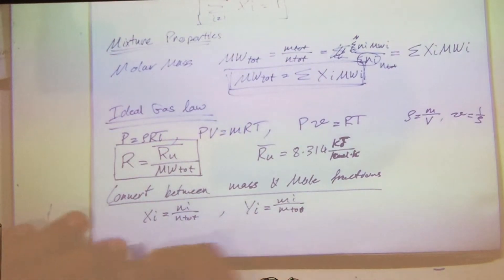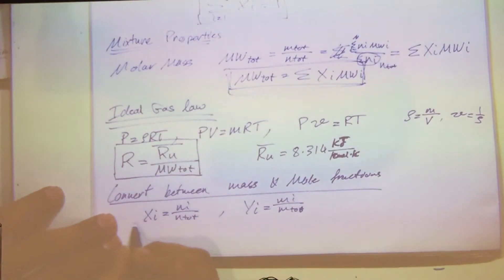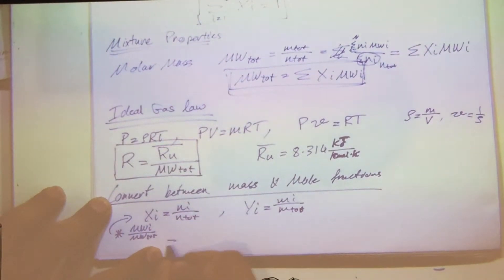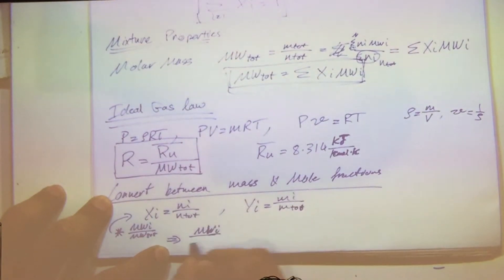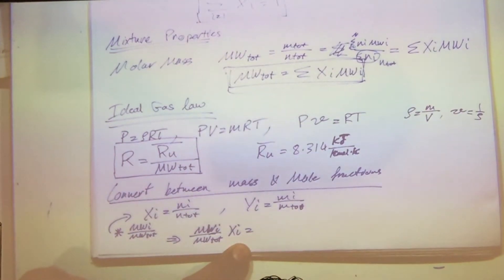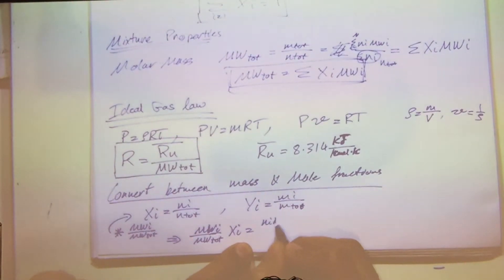So if I go and say, let's multiply the mass fraction by the molecular weight of each individual species divided by the molecular weight of the total. So what am I going to get? I'm going to get the molecular weight of each individual species over total multiplied by Xi. Now, you don't have to know the derivation, but I'm just deriving it for you and I'm going to write the final equation. So I'm not going to quiz you on the derivation.